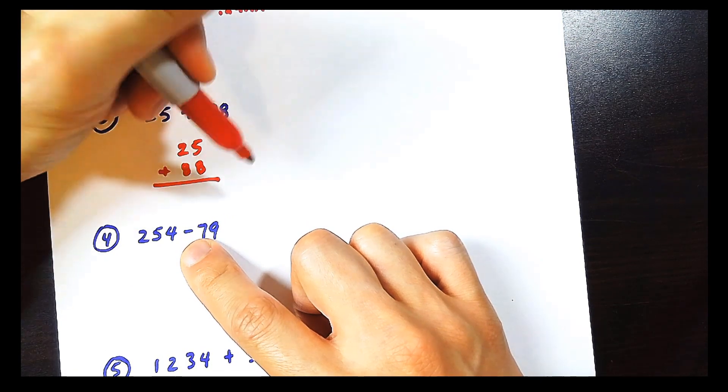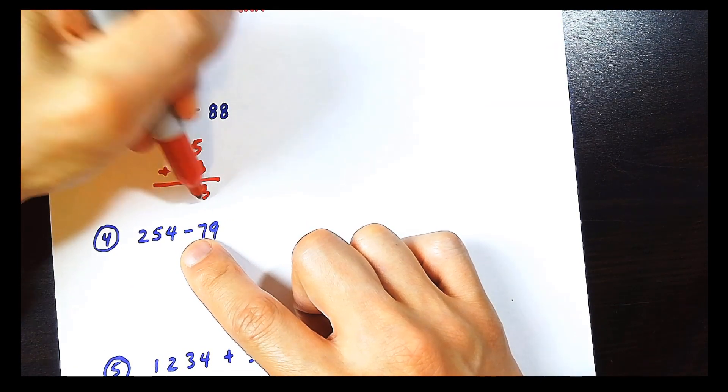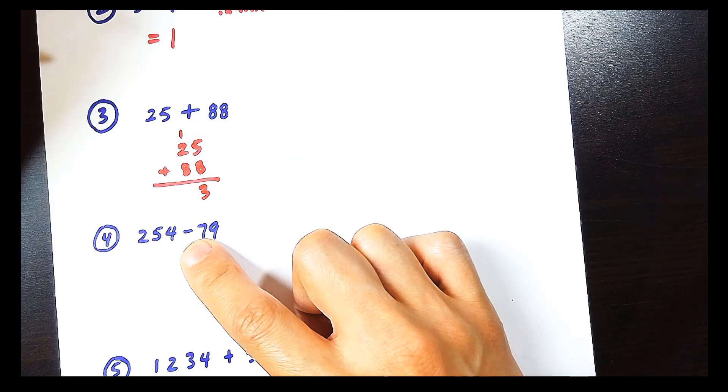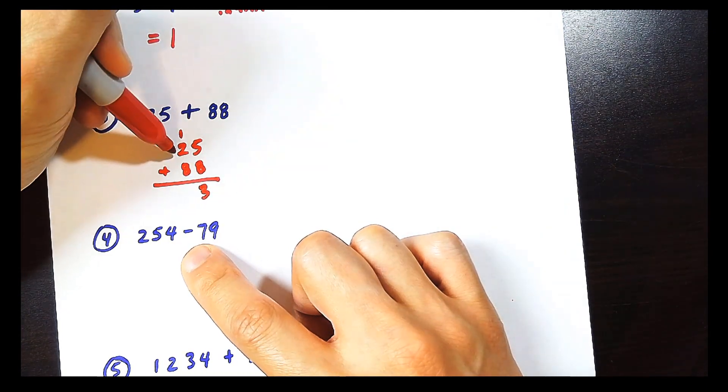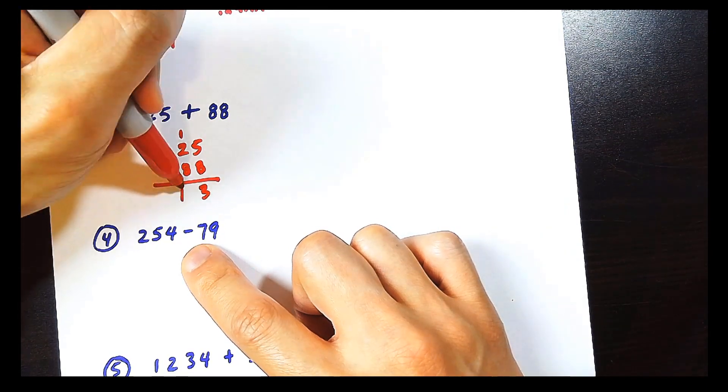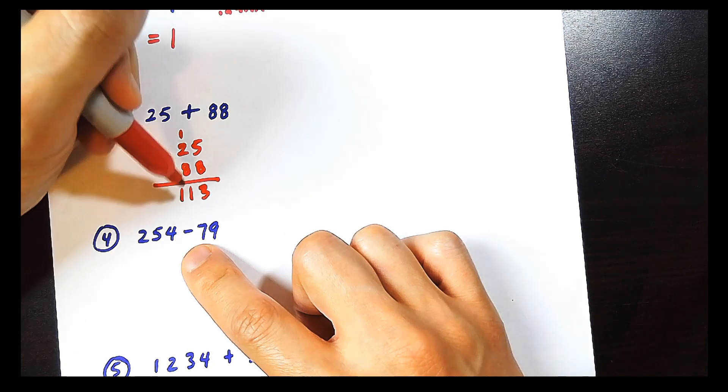8 plus 5 is 13. So we write the second digit here, and you carry the 1 here. 8 plus 2 is 10, plus 1 is 11. So the final answer is 113.